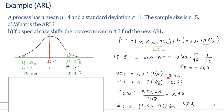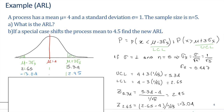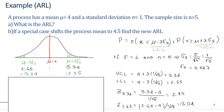The UCL (upper control limit) is 4 plus 3 multiplied by 1 over the square root of 5, which equals 5.34. The lower control limit is 4 minus 3 multiplied by 1 divided by the square root of 5, which equals 2.65. To compute the probability we find the z-scores: z for 5.34 is (5.34 minus 4) divided by (1 divided by the square root of 5), giving a z-value of 2.95.